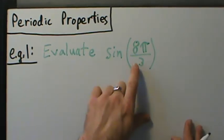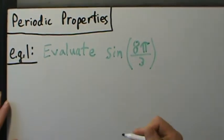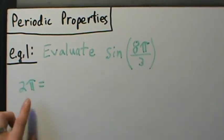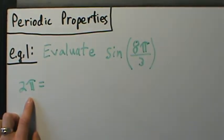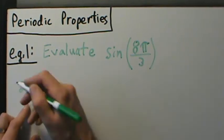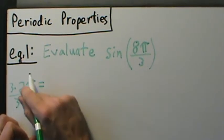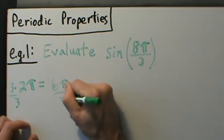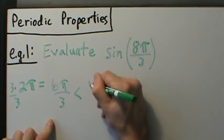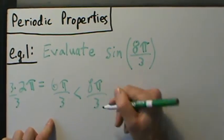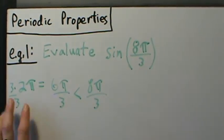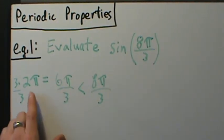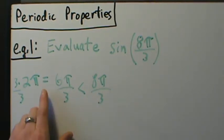8π over 3 is of course not negative. Let's put 2π as something over 3 so we can compare it to 8π over 3. Well, 2π times 3 over 3 is 6π over 3. Now 6π over 3 is less than 8π over 3, so in other words 8π over 3 is larger than 2π. 8π over 3 is larger than 6π over 3, and 6π over 3 is 2π, so 8π over 3 is larger than 2π.